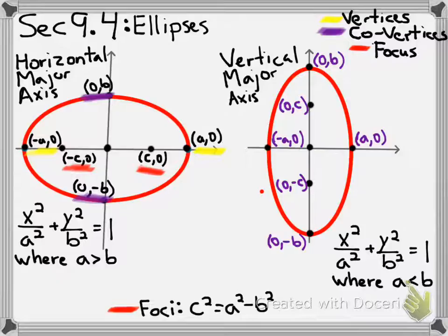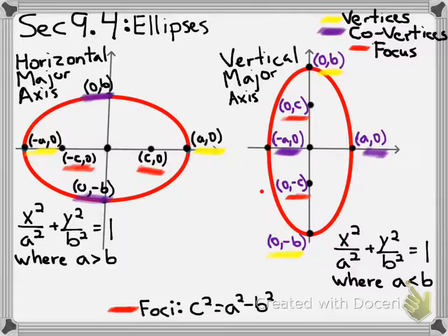For the vertical major axis ellipse, when we stretch in the y direction, the vertices are now the b values since that's the main direction stretched. The co-vertices become the a values, and the foci are still the c values, but this time they go in the y direction. So from the equation, a larger denominator under x means horizontal stretch; a larger denominator under y means vertical stretch. From there, we find our reference points and sketch the ellipse.